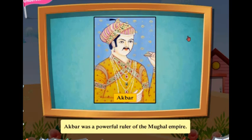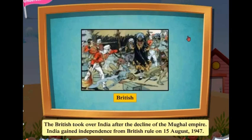The British took over India after the decline of the Mughal Empire. India gained independence from British rule on 15th August 1947.